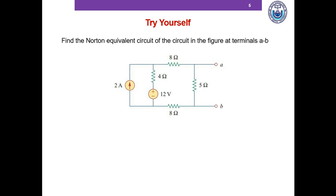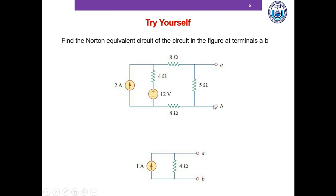Hopefully we've been able to do this. This is very much similar to the Thevenin equivalent circuit. In Thevenin we determined the open circuit voltage VAB, but here we do a short circuit between terminals A and B. The 5 ohm resistor becomes parallel to a short circuit, so we can eliminate this resistance. The current that flows through this short circuit is our Norton current.